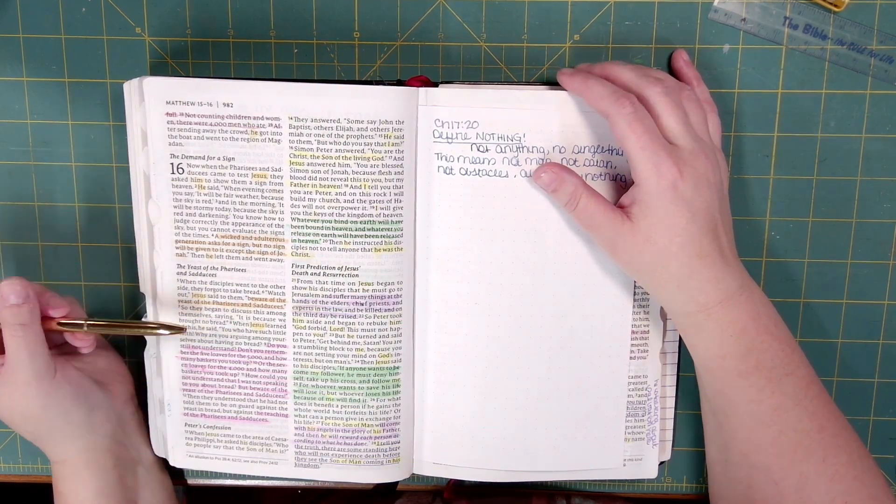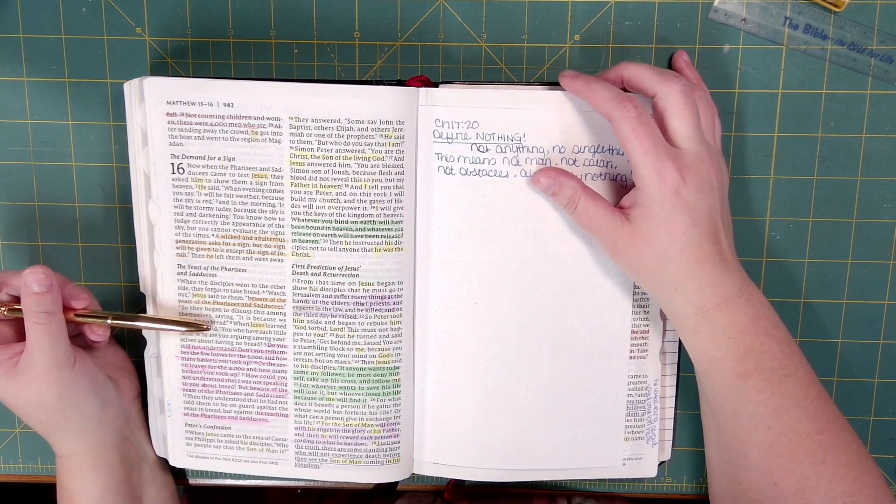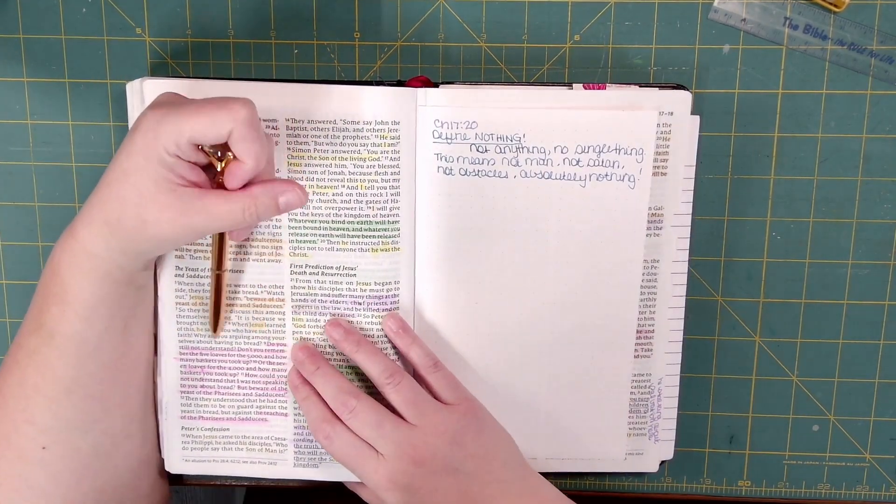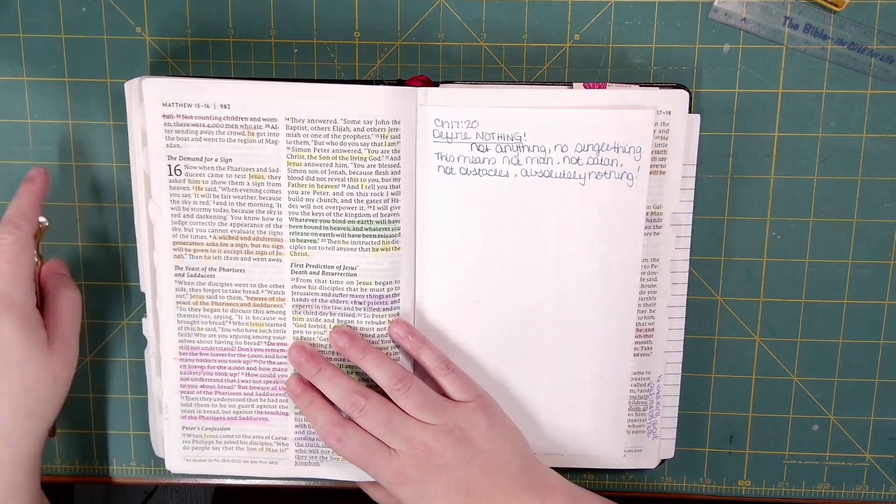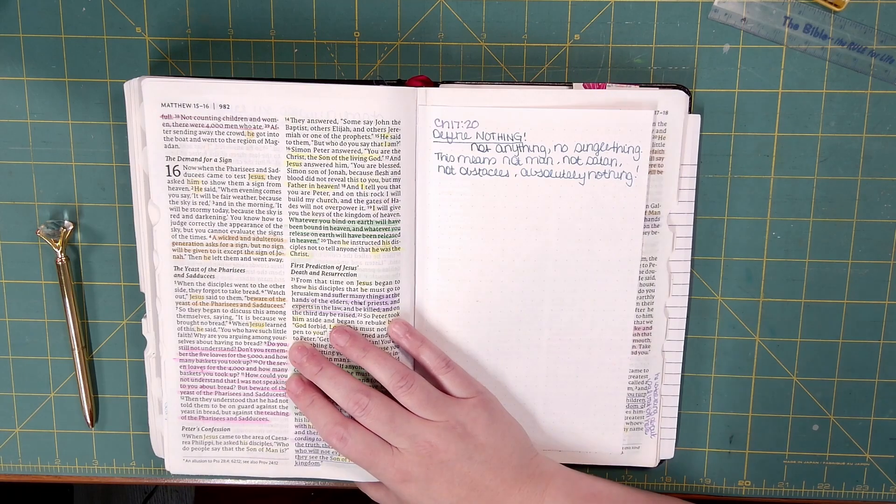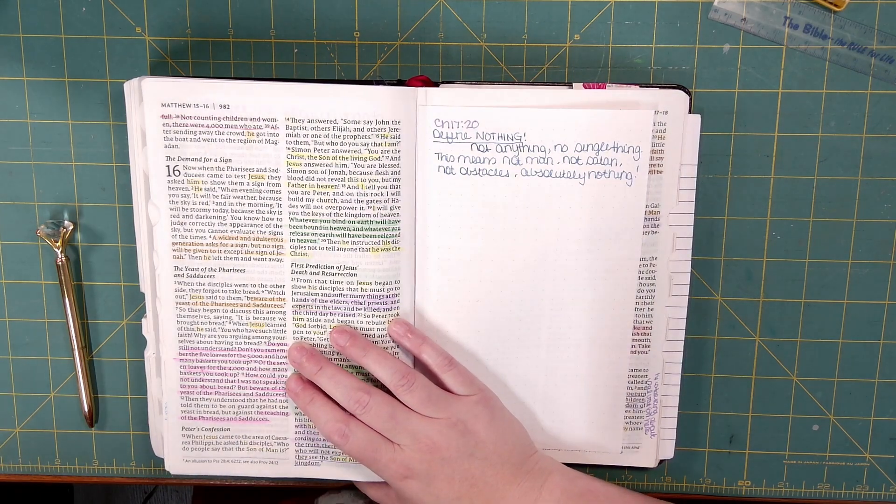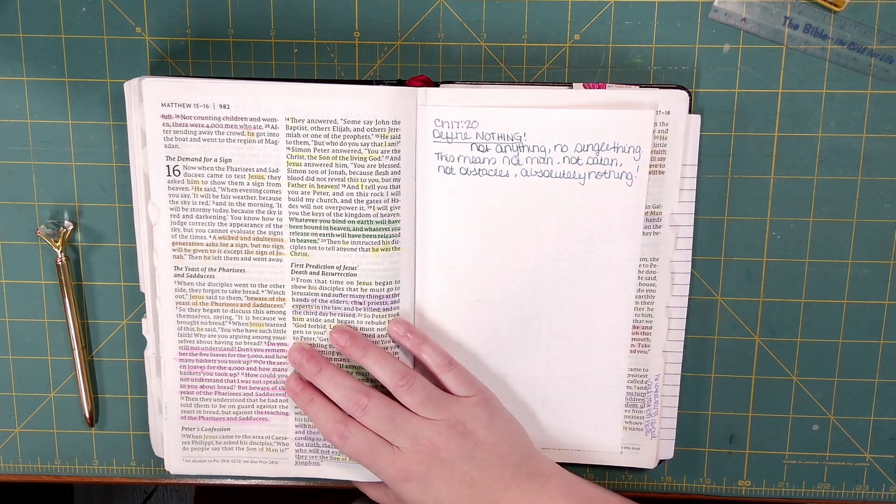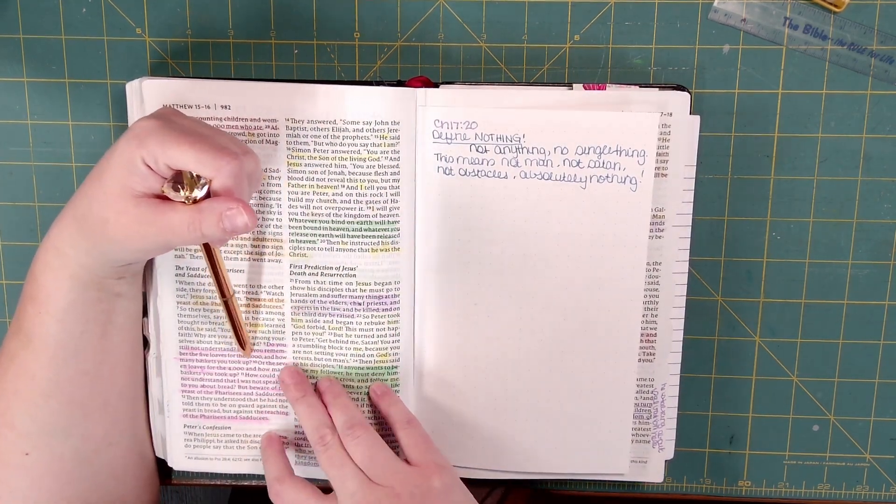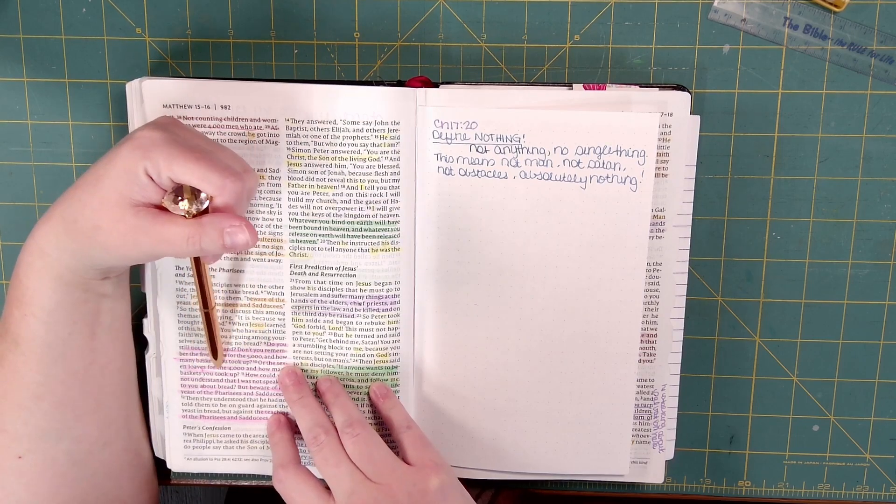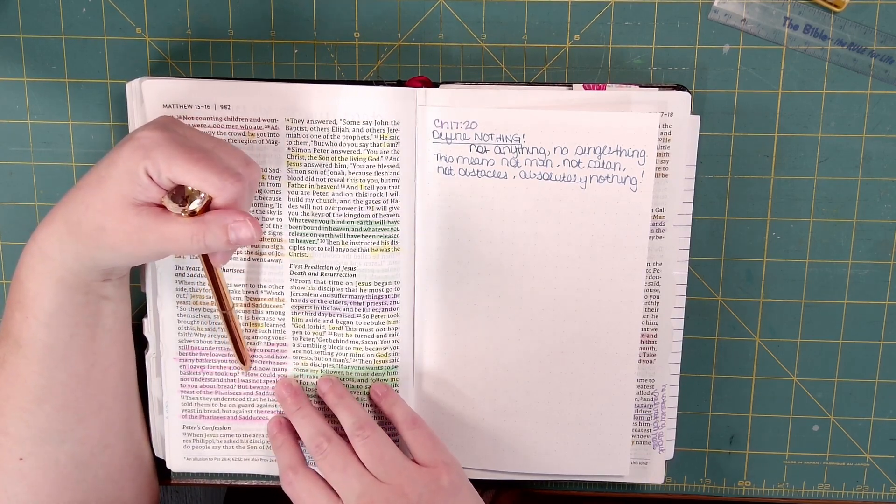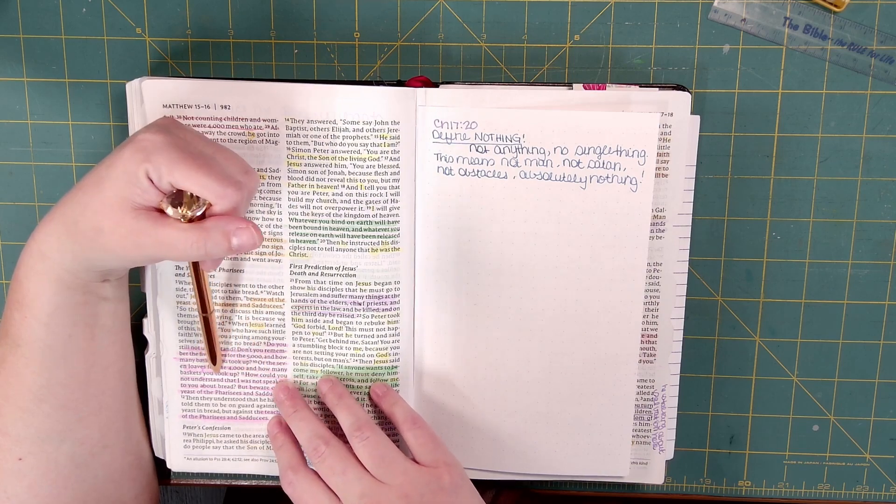When Jesus learned of this, he said, You who have such little faith, why are you arguing among yourselves about having no bread? Do you still not understand? Don't you remember the five loaves for the five thousand and how many baskets you took up? Or the seven loaves for the four thousand and how many baskets you took up?